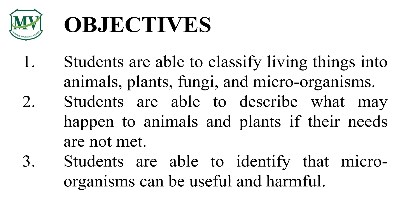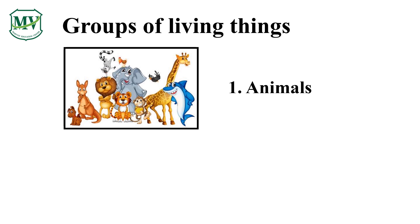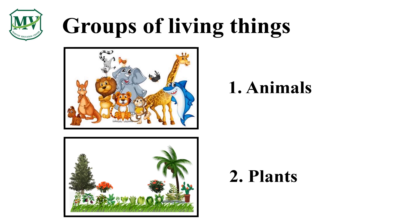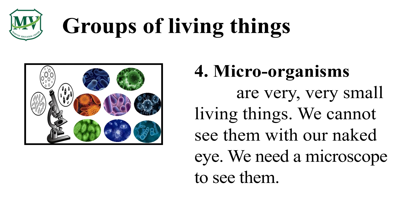You will learn how to classify different living things, whether they are animals, plants, fungi, and microorganisms. Living things can be grouped into four main groups. These include animals, plants, fungi such as mushrooms, and lastly microorganisms, which are very small to be seen with just our eyes. We need a microscope to see them.